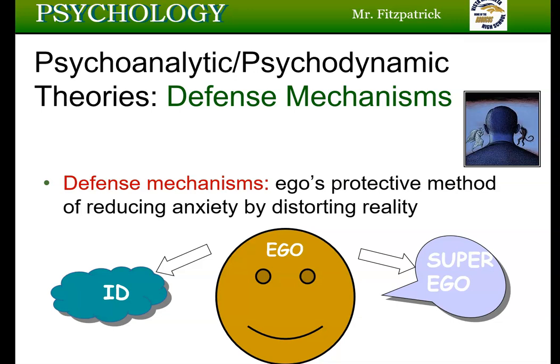When we have conflicts where the ego can't satisfy both the id and the superego, anxiety begins to slip into the consciousness. Anxiety is uncomfortable and people want to avoid it. So we avoid anxiety through defense mechanisms — something that is widely accepted in psychology today. Defense mechanisms are the ego's protective method of reducing anxiety by distorting reality.